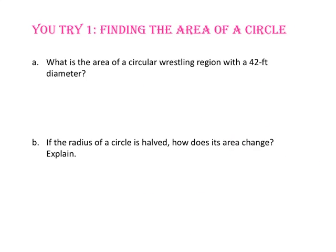Pause the video and do U-try number 1. For part A, what is the area of a circular wrestling region with a 42-foot diameter? Let's start by finding the radius — half the diameter, or 42 divided by 2 — which gives us a radius of 21 feet.